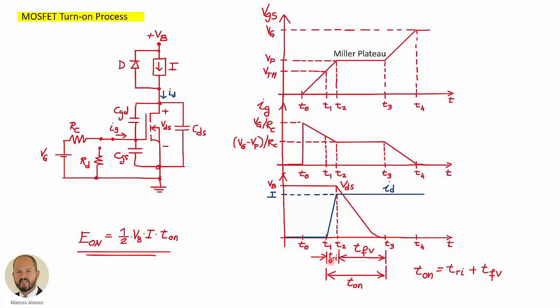One interval is when the current is rising until reaching the final steady-state value. The other interval is when the voltage starts decreasing once the current has reached the final value — this is the interval T sub FB, the falling of the voltage. We need to calculate these two values in order to get T-on and then calculate the losses. Let's see how to obtain these times using the equations obtained in the previous video.